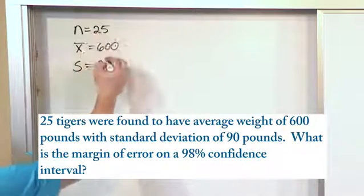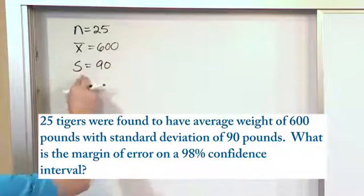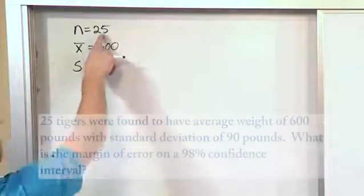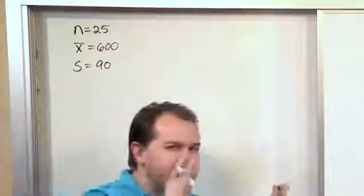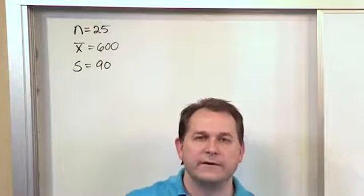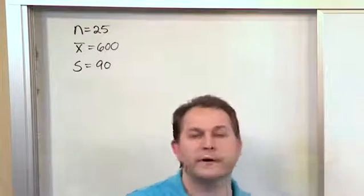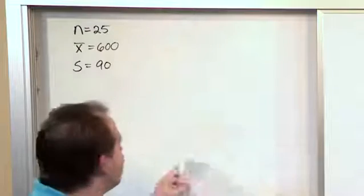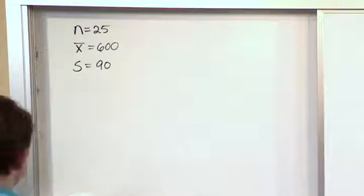So what this means is of the 25 tigers, this is not the population, this is the sample standard deviation. Of the 25 tigers, the deviation about the mean was 90 pounds. So that means some tigers were lower, some tigers were higher than 600 pounds, but the spread of that data is denoted by that standard deviation.